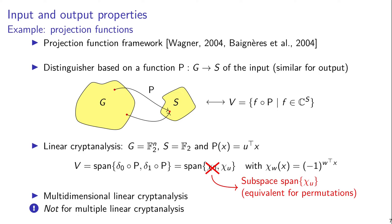That would be a linear function as well. But multiple linear cryptanalysis, as opposed to multidimensional linear cryptanalysis, does not actually follow that framework. Because of a subtle difference: in multiple linear cryptanalysis, while we have several linear combinations that we observe, the distinguisher is not able to combine them in an arbitrary way.